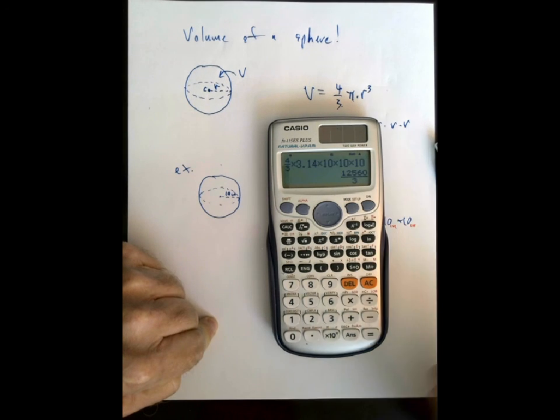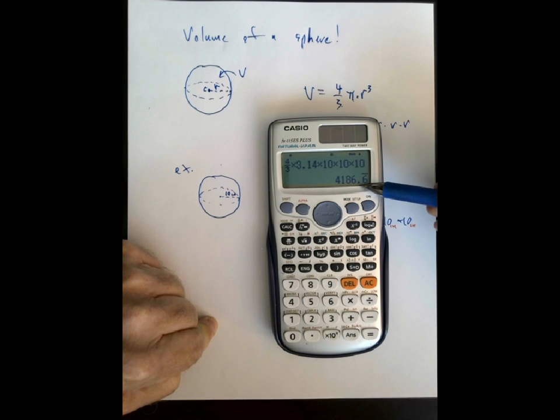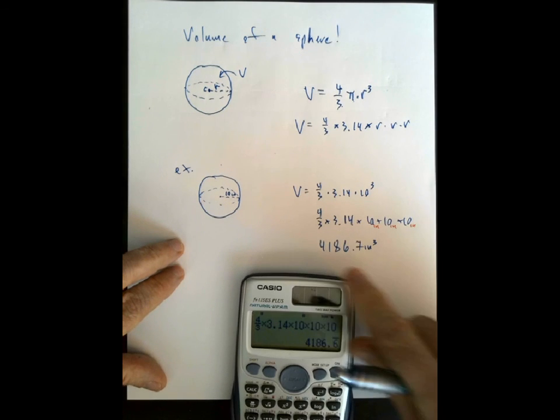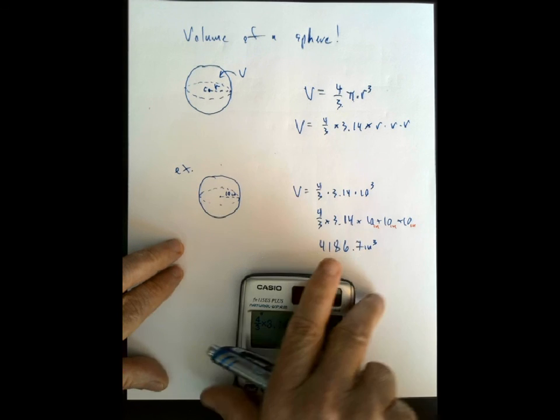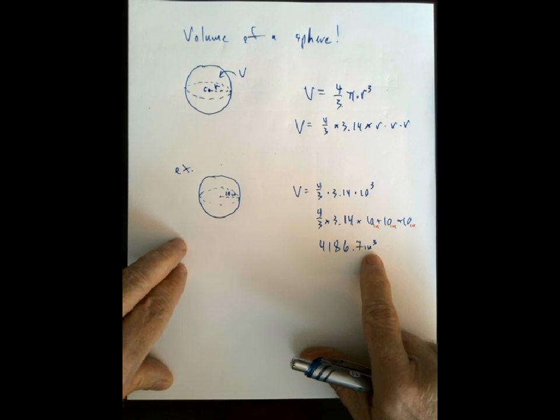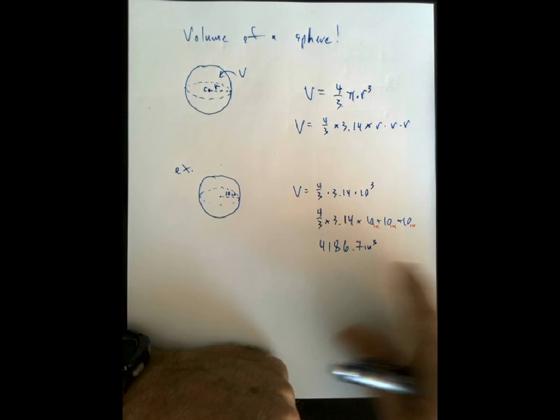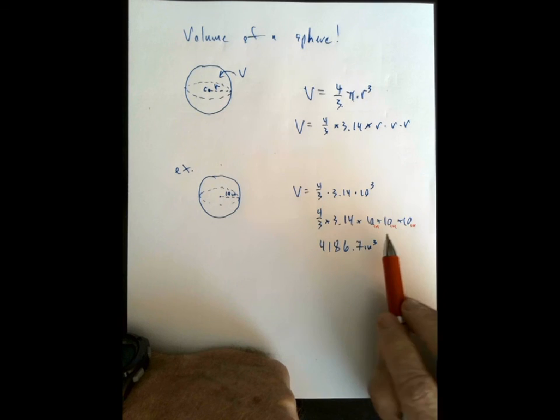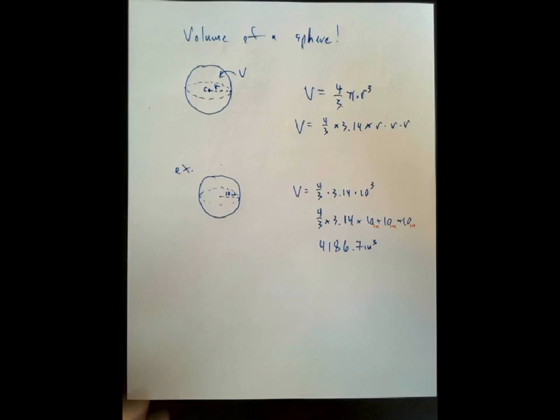Boom. And that says 4,186, and you see that 6 bar means it would keep repeating. So, I'm going to round that up to 0.7. So, our volume here is going to be 4,186.7 cubic inches. Because, remember, volume units are always in terms of cubes. Kind of makes sense if you think about it. In the formula, we're multiplying inches times inches times inches, and inch times inch times inch would give you inch to the third power.